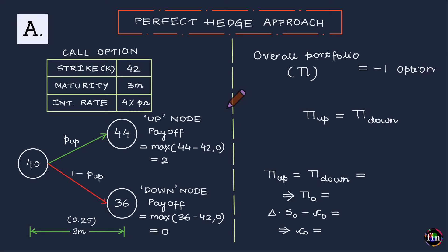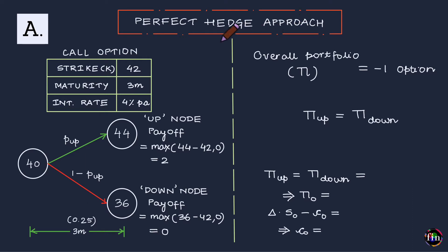In this video we will take a look at a simple solved example that will help us understand how the binomial tree method works for pricing European and American calls and puts. The focus is to find the premium of a European call option which has a strike of 42 and maturity of three months. The end goal of this video is to establish the equivalence of three different approaches: the perfect hedge approach, the replicating portfolio approach, and the risk neutral valuation approach.